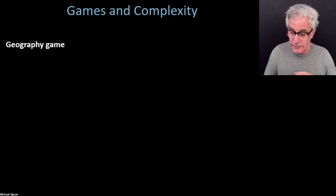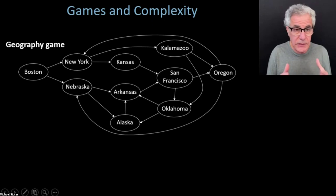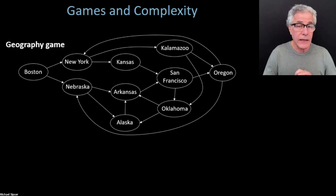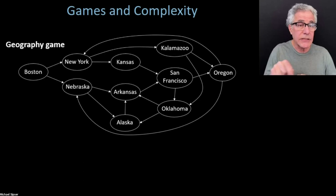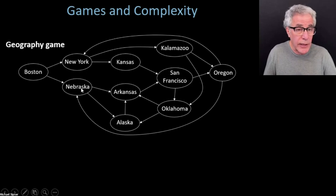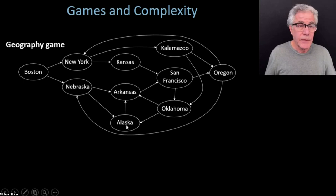Let's think about that game in a slightly more abstracted, formalized way. You write down all of the legitimate places — they become nodes of a graph. Then you draw an edge from one node to another if that corresponds to a legal move in the game. So Boston connects to places that start with N, like New York and Nebraska. The first person might pick Boston; the second person might pick either of these two. Then back to the first person — if they picked Nebraska, they could pick Arkansas or Alaska, and so on.